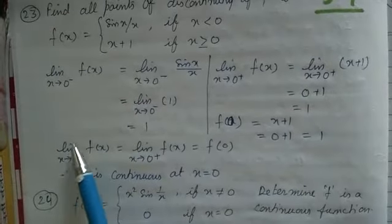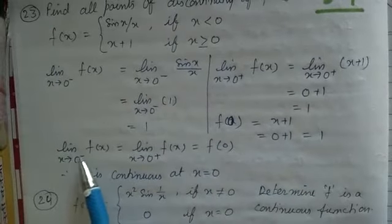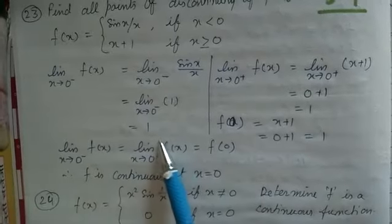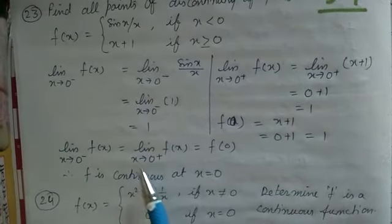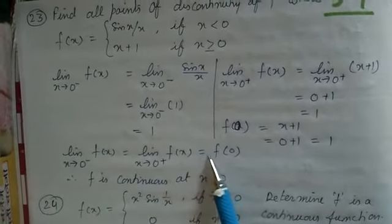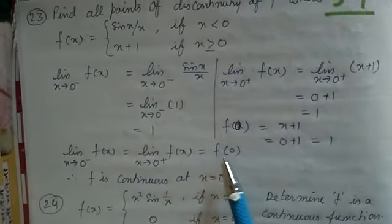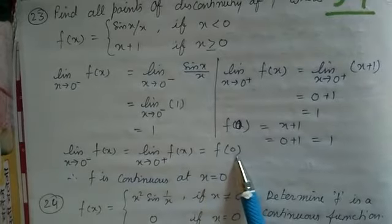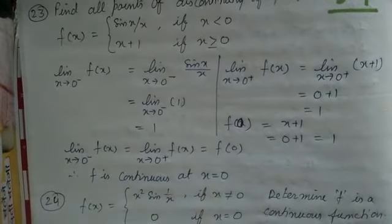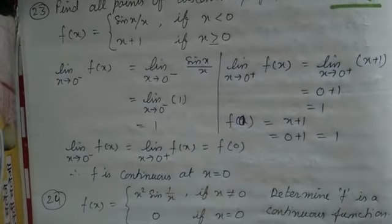That is, limit x tends to 0⁻ of f(x) = limit x tends to 0⁺ of f(x) = f(0). All three are equal, hence the function is continuous. Now I am going to tell you one more question in this video.